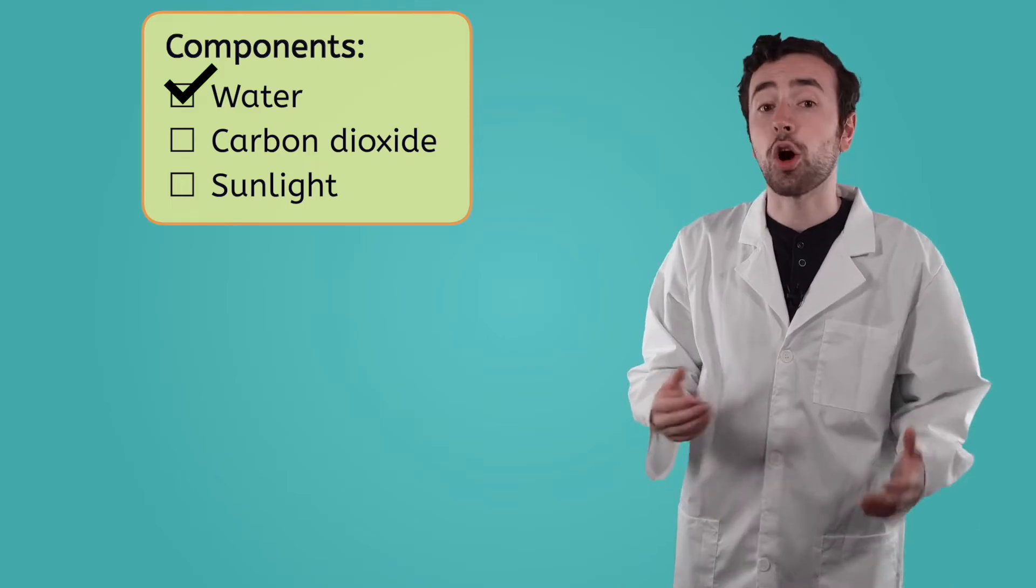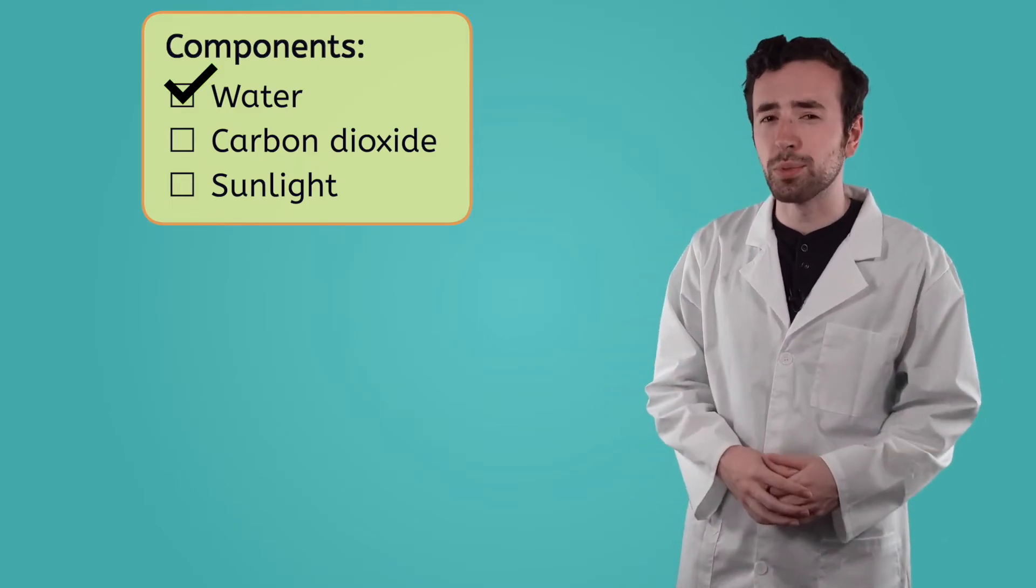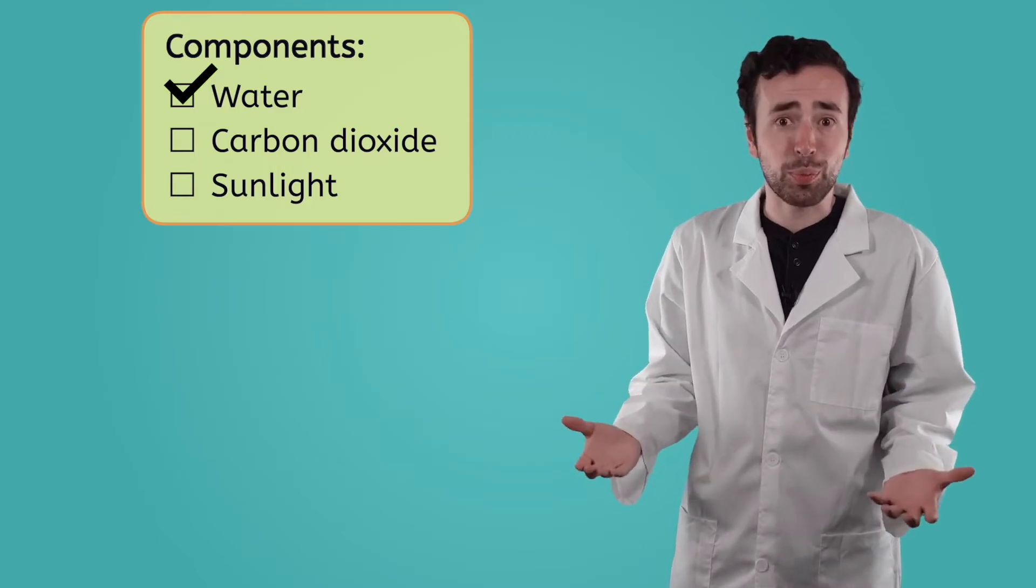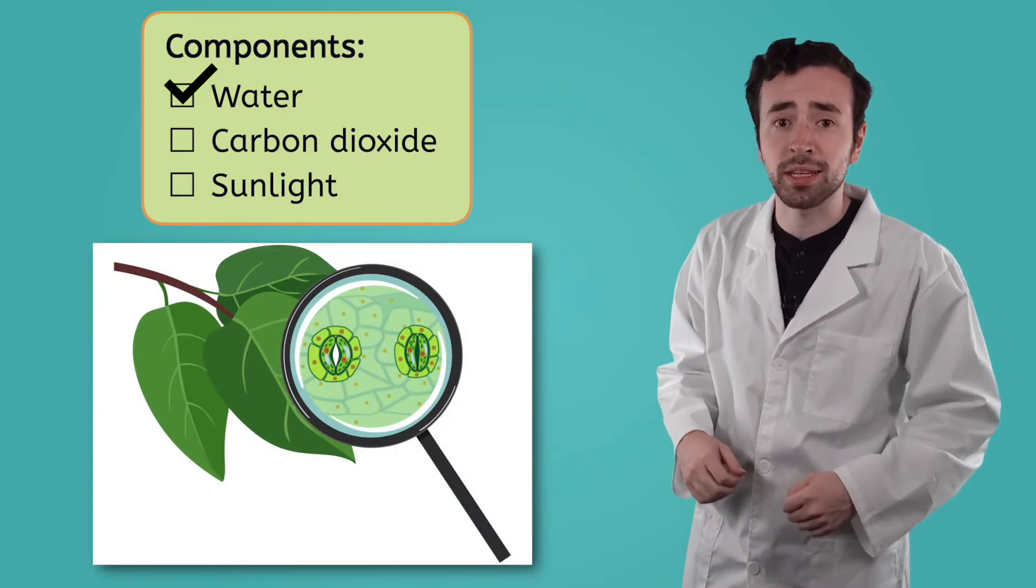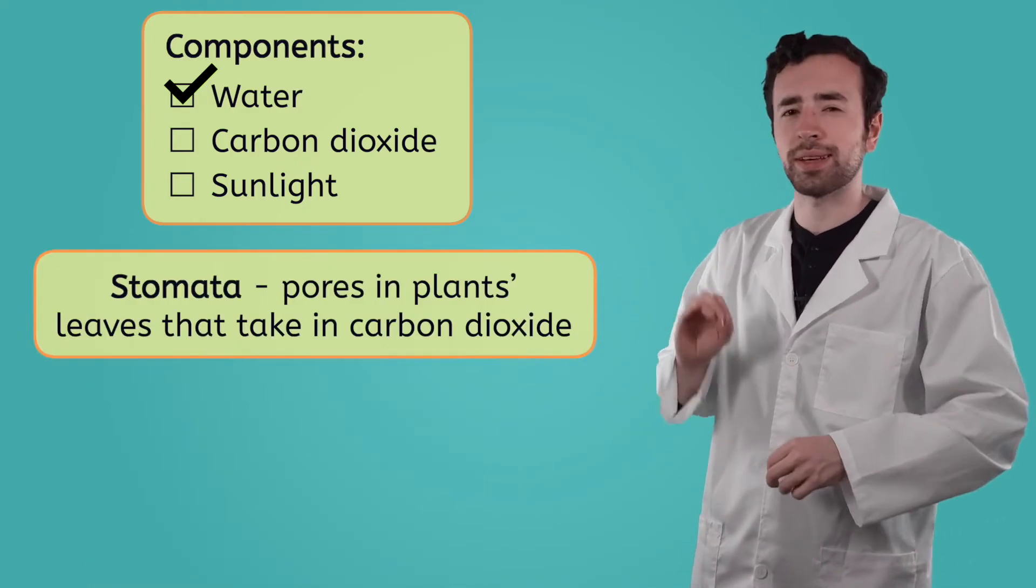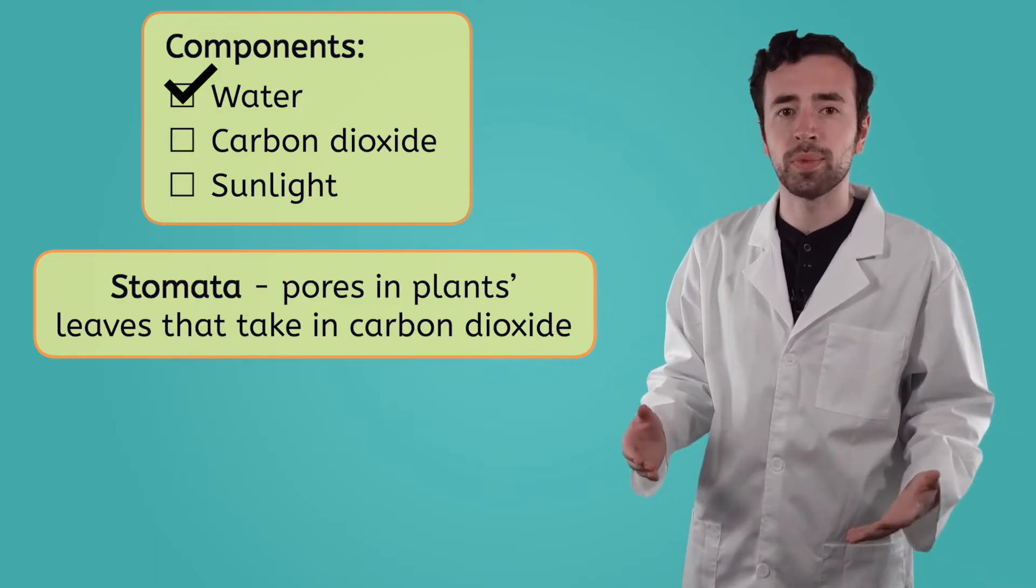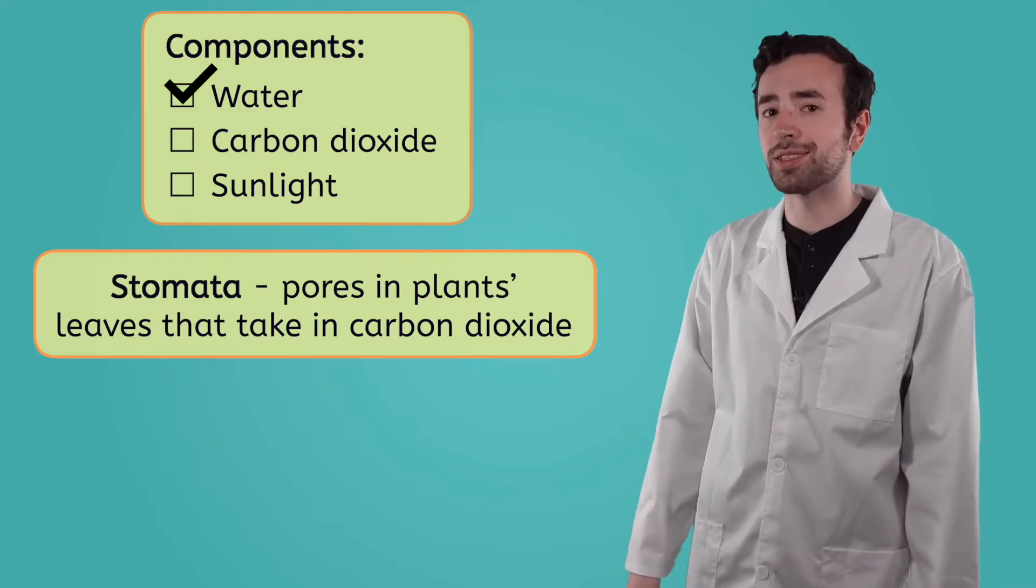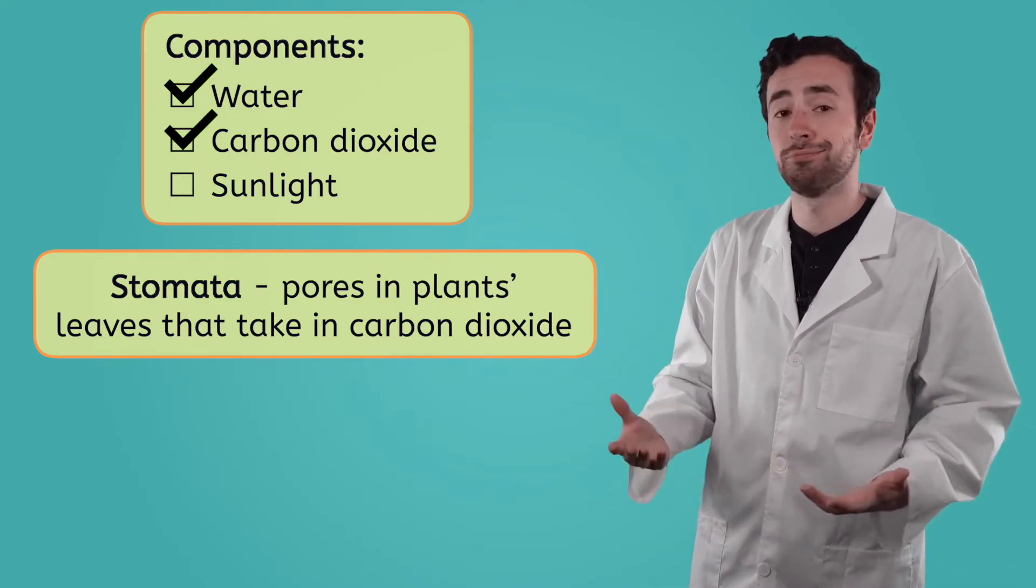The next component, carbon dioxide, is found in the air. Similar to how animals need to breathe, plants breathe too. They take in air, including the carbon dioxide they need for photosynthesis, through pores in their leaves, called stomata. So roots deliver the first component, water, and stomata allow for plants to breathe in the second component, carbon dioxide. Two components down.